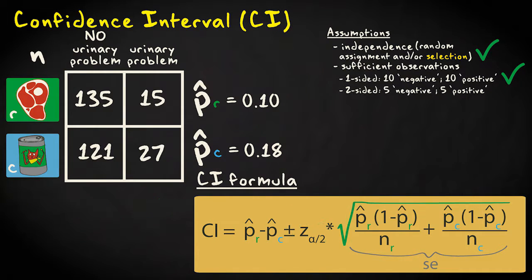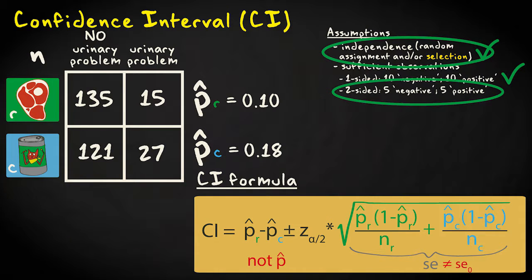The standard error of the difference score equals the square root of the sum of the group proportions times its complement, the group's variance, divided by its sample size, and this for each group. Notice that we're not using the pooled proportion, since we're not assuming a null hypothesis value. Also remember that the same assumptions as for a two-sided null hypothesis test are required.